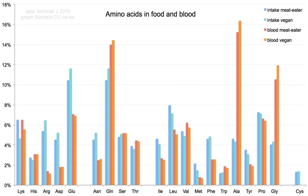Many important proteinogenic and non-proteinogenic amino acids have biological functions. For example, in the human brain, glutamate and gamma-aminobutyric acid are, respectively, the main excitatory and inhibitory neurotransmitters. Hydroxyproline, a major component of the connective tissue collagen, is synthesized from proline. Glycine is a biosynthetic precursor to porphyrins used in red blood cells. Carnitine is used in lipid transport.